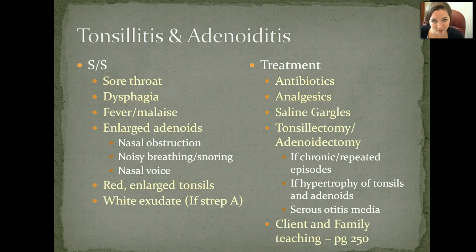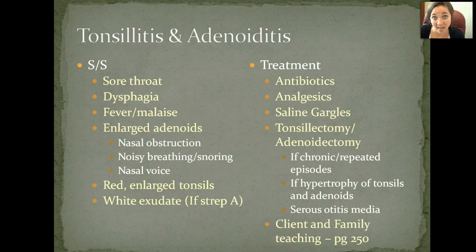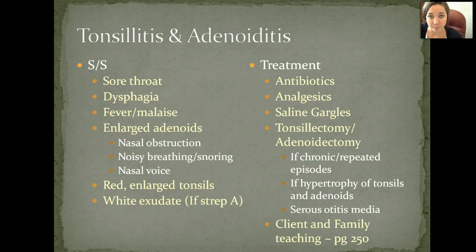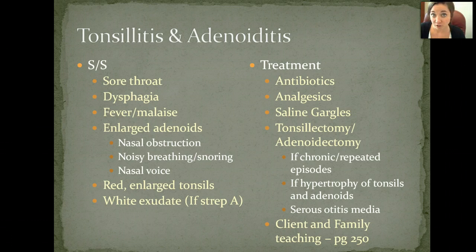You might also notice red or enlarged tonsils. Whenever you ask them to open their mouths, you're going to see them swollen and reddened. You'll also probably see wet white exudate — like those patches we see in strep A. This can also be caused by strep A, so this is one of those things that can come about from pharyngitis caused by strep A, eventually leading to tonsillitis and adenoiditis.